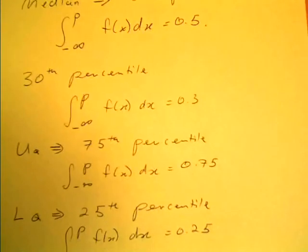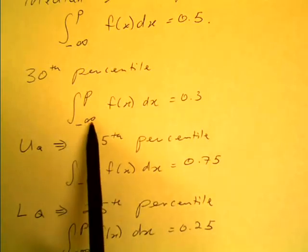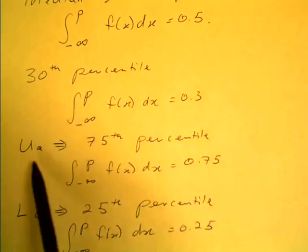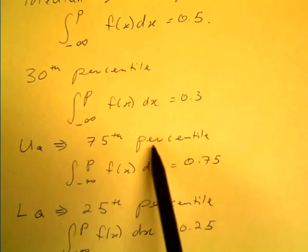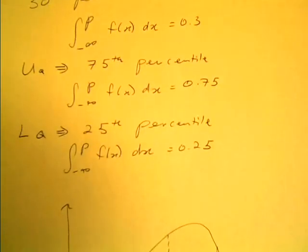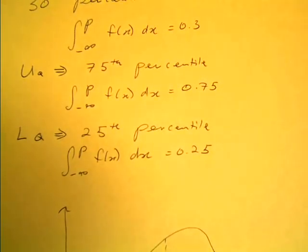Similarly, the 30th percentile would be the integral from negative infinity to p of f of x dx equals 0.3, upper quartile which you should recall is the 75th percentile means the integral equals 0.75, lower quartile means that it equals 0.25.